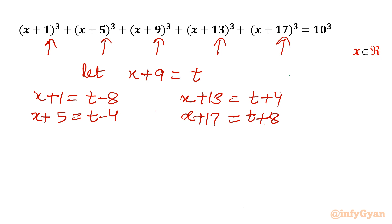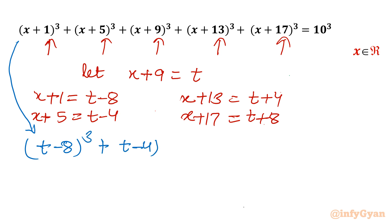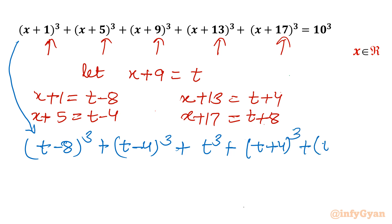Now I will frame one equation in t after substitution. I will write: t minus 8 whole cube, plus t minus 4 whole cube, plus t cube (the central middle term), plus t plus 4 whole cube, plus t plus 8 whole cube. And the RHS is 10 to the power 3, which is 1000.